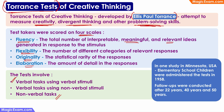Torrance Tests are quite reliable given the fact that they have been extensively used and tested. For example, in one study in Minnesota in the US, the test was administered in 1958 to a group of elementary school children. A follow-up was done after 22 years, after 40 years, and even after 50 years from the original test to see if the results and predictions of the original tests were still correct. That way, Torrance Tests have been shown to be quite reliable in measuring creativity, divergent thinking, and problem-solving skills.